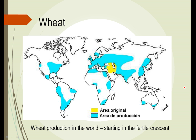This map shows where wheat originated — a Middle Eastern plant, like so many things in the beginning of agriculture. The blue area is where wheat is commonly grown today. Wheat can be grown in semi-tropical areas such as Florida, areas of Mexico, and parts of Brazil, but it also can grow in much colder regions across the northern U.S. and Canada, and across northern Europe and Asia.